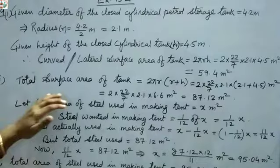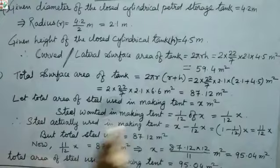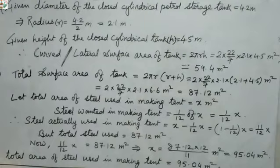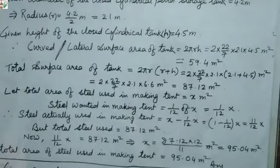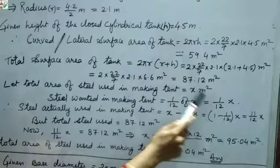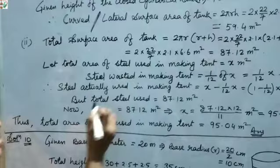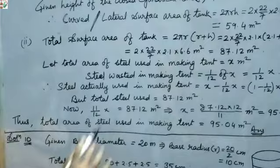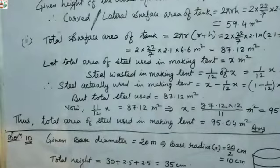Now, we don't know how much total steel was used. Let total steel = x m². The steel wasted in making the tank = 1/12 of x. So steel actually used = x − (1/12)x = x(1 − 1/12) = (11/12)x.